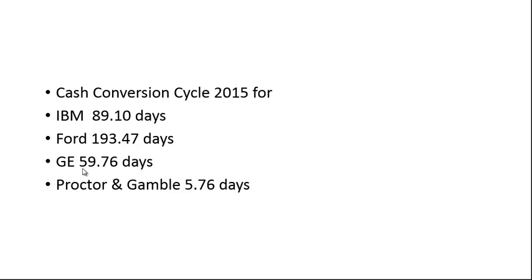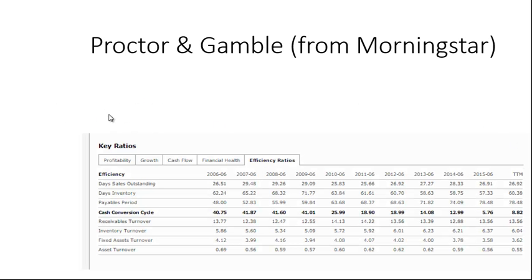GE is at 59.76 days, about two months. Procter & Gamble is actually at 5.76 days — not negative, but quite a bit lower. Looking at Morningstar's key ratios for Procter & Gamble from 2006 to 2015, you can see their cash conversion cycle has been going down. They seem to be converting raw materials into cash quite a bit more quickly over the years.